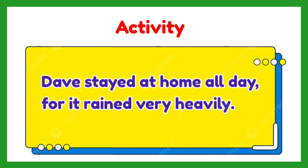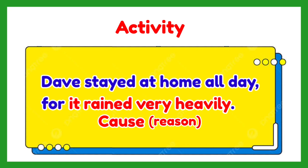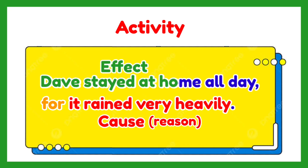Last one: 'Dave stayed at home all day, for it rained very heavily.' The cause is: it rained very heavily — it tells the reason why Dave did not go out, introduced by the word 'for.' The effect is: Dave stayed at home, which is the result of the heavy rain.